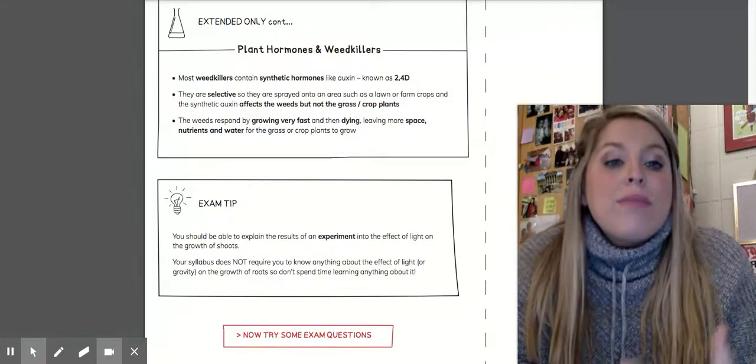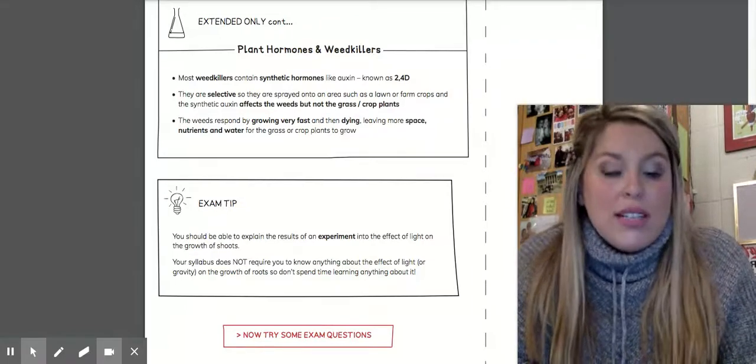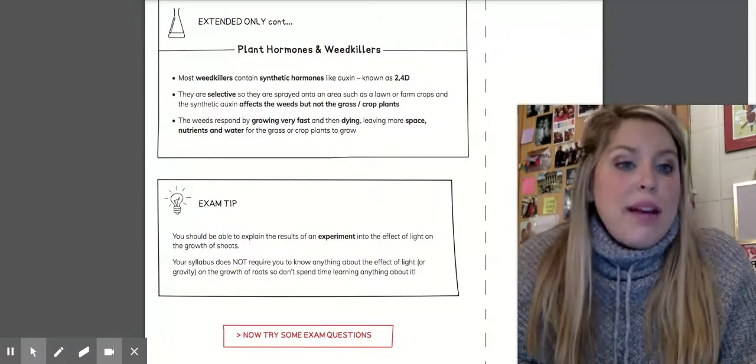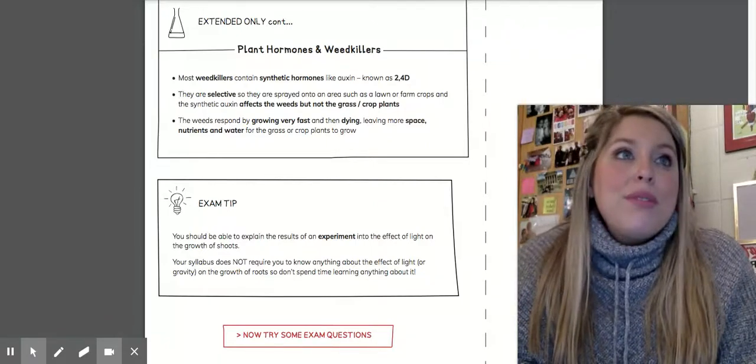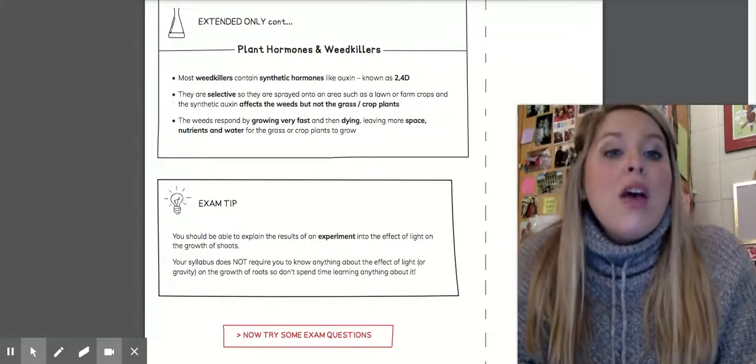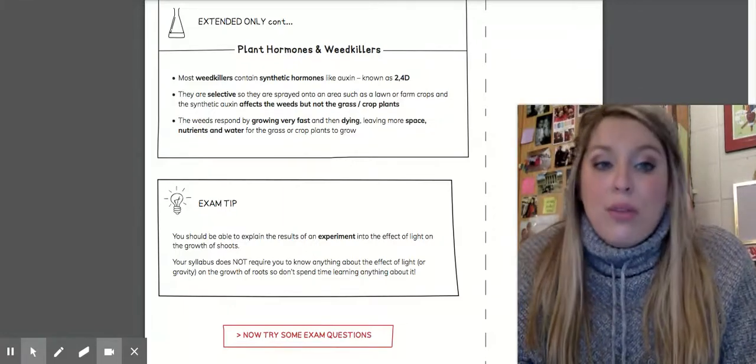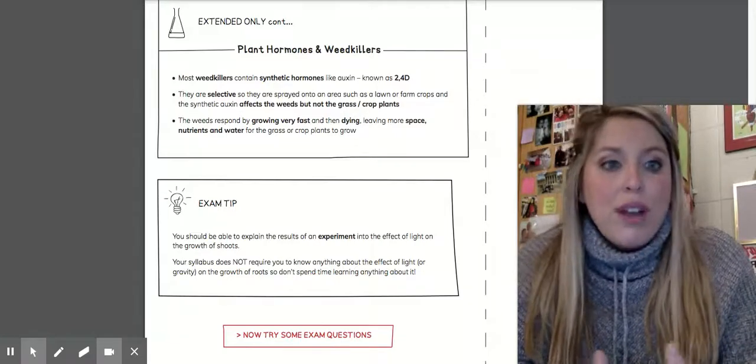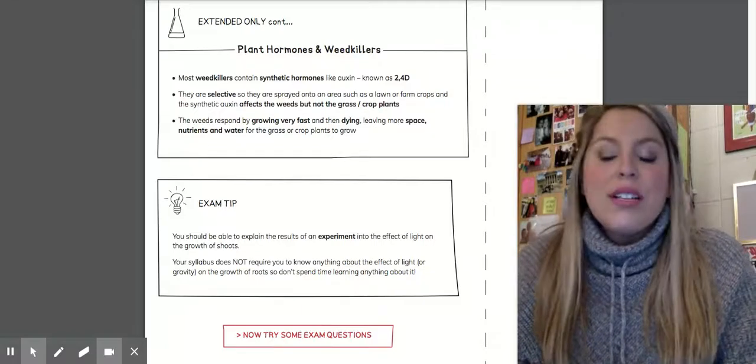The synthetic auxin affects the weeds, but not the grass or the crops or the plants. These weed killers target with auxins plants that we want to get rid of. Think about people, a lot of people use the lawn doctor here in town to get their grass nice and green. They can use weed killers to target all the weeds in their yard. Get rid of those so you can have nice, beautiful grass, the stuff that you want in your yard to keep nice and pretty.